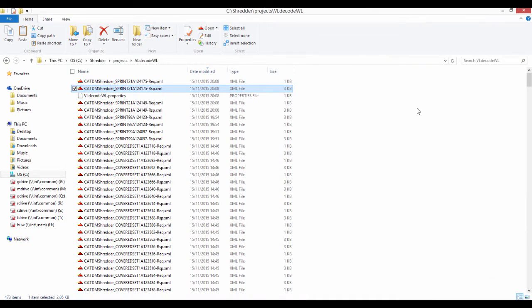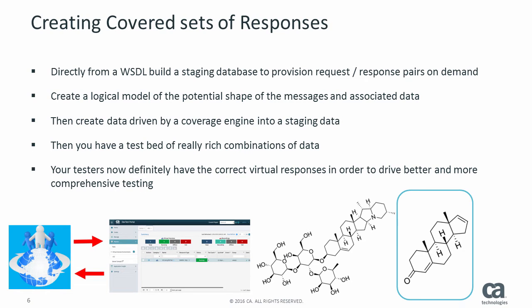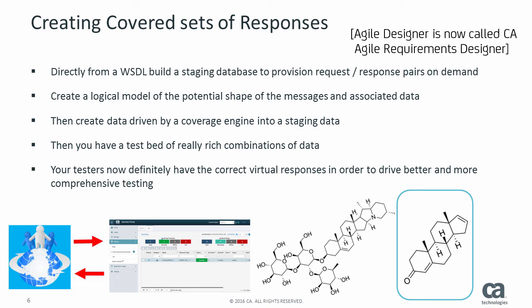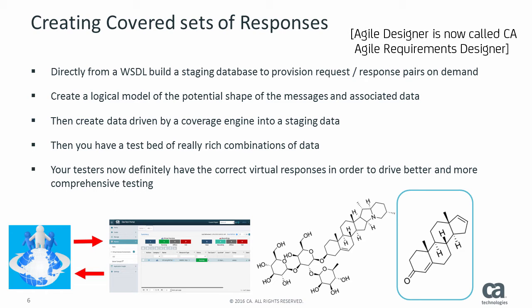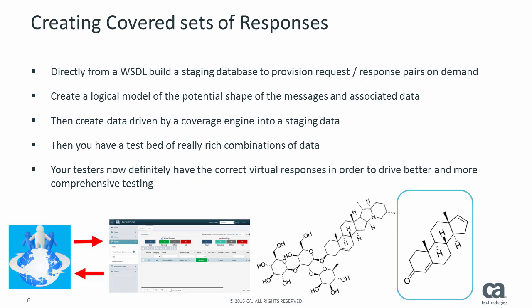That's now created an SV on demand portal that allows testers and developers to quickly request and get the request/responses they need for their testing. Now we're going to move on to creating covered sets of responses. From the WSDL, we build a staging database, create a logical model of the potential shape of the message and associated data, then create data driven by agile designer coverage techniques. The result is a test bed of rich combinations of test data, giving testers the correct virtual responses for more comprehensive testing. We'll create lots of nice combinations and push them out directly into the SV engine.